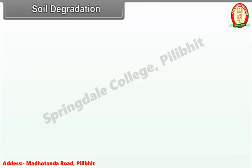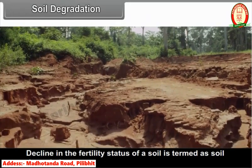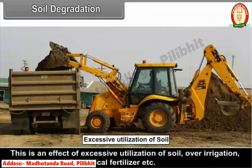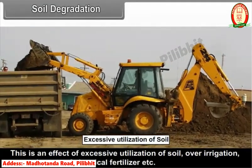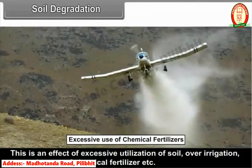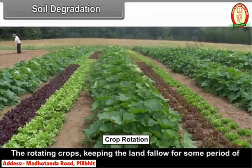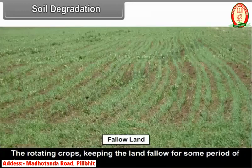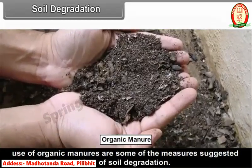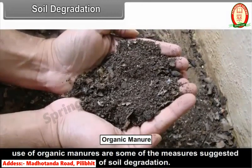Decline in the fertility status of a soil is termed as soil degradation. This is an effect of excessive utilization of soils, over-irrigation, and excessive use of chemicals and fertilizers. Rotating crops, keeping the land fallow for some period of time, and use of organic manures are some of the measures suggested to counter the problem of soil degradation.